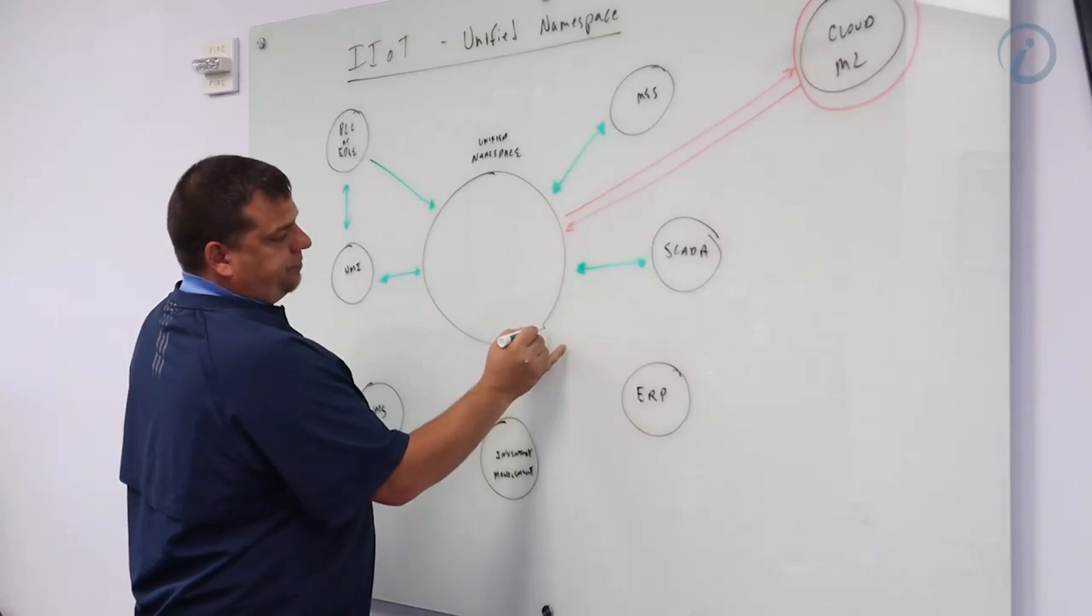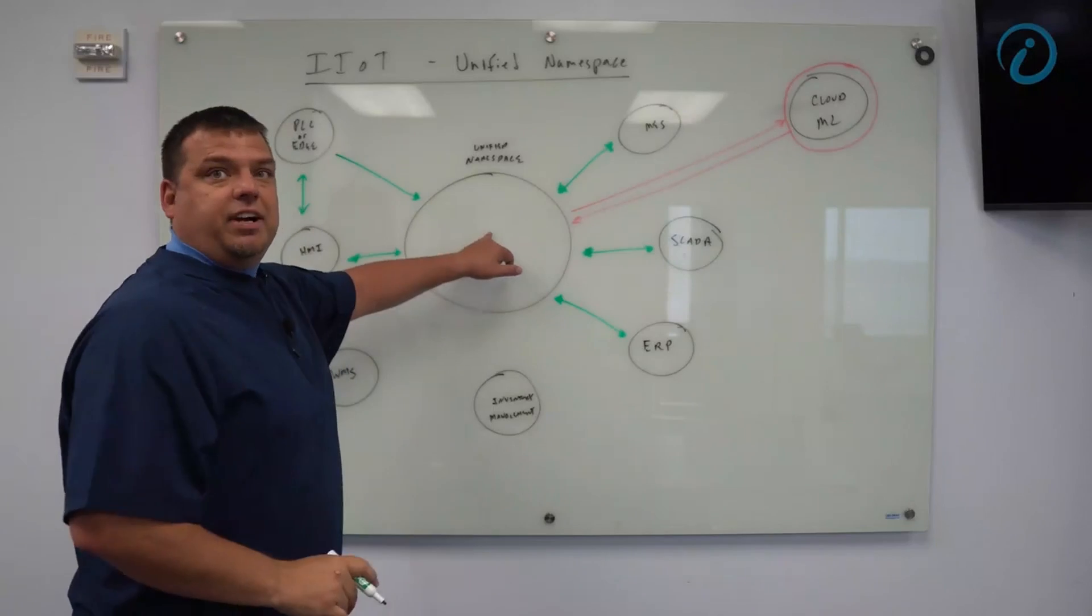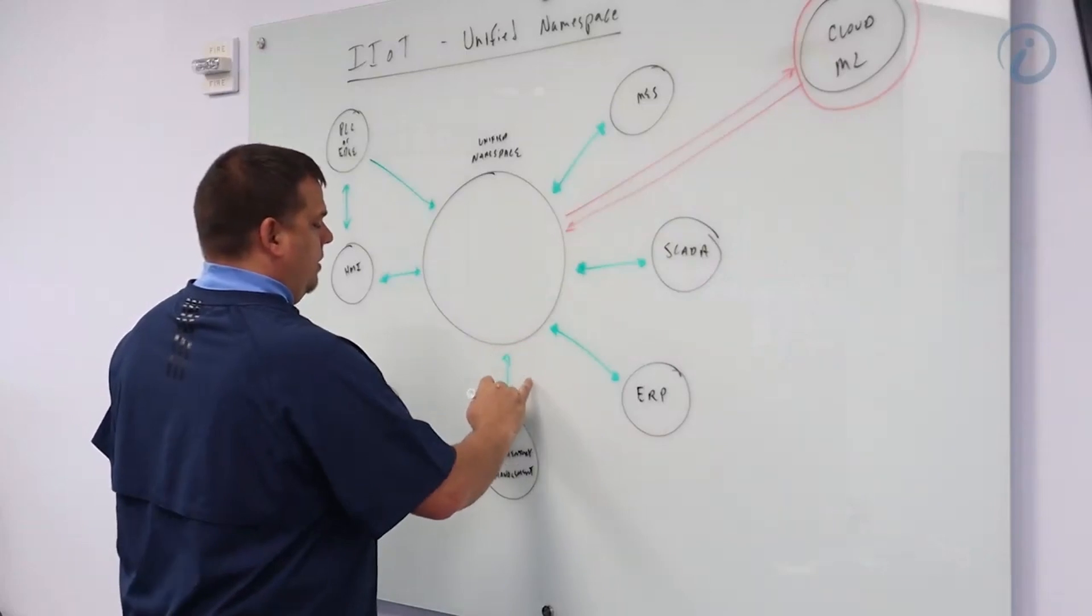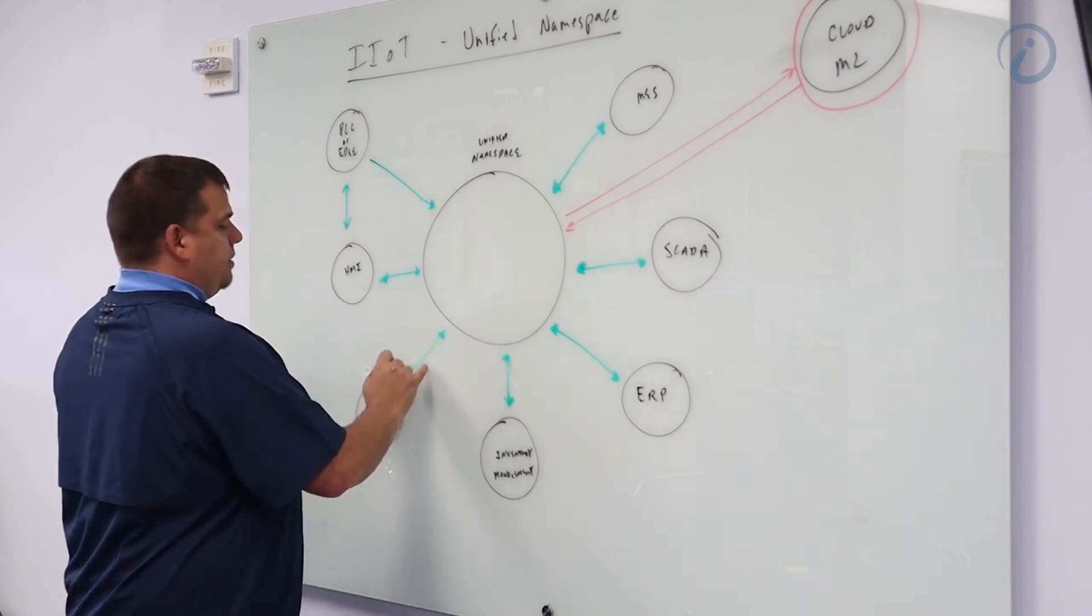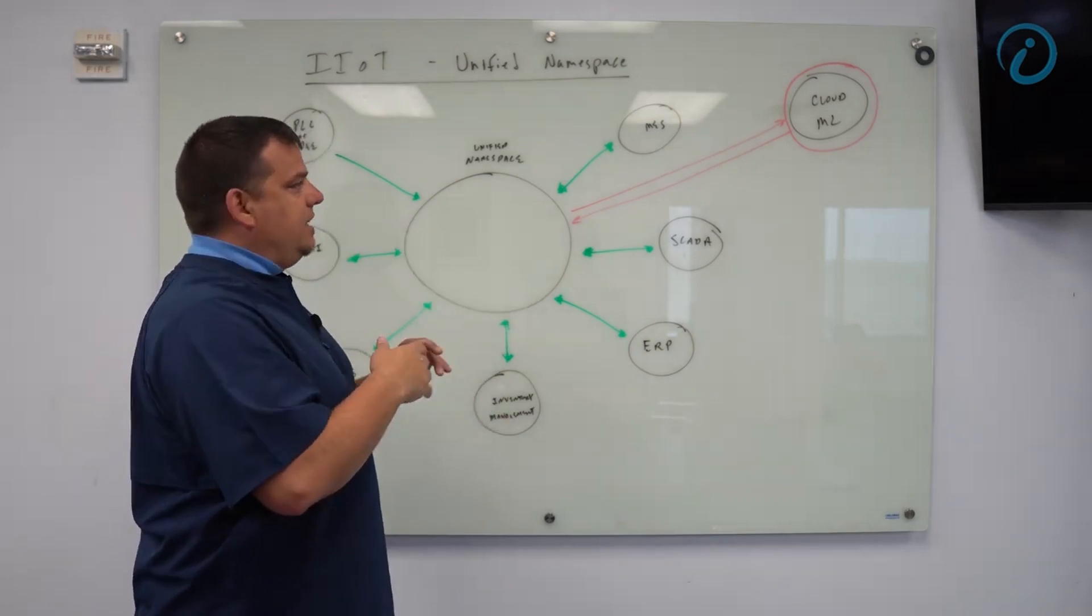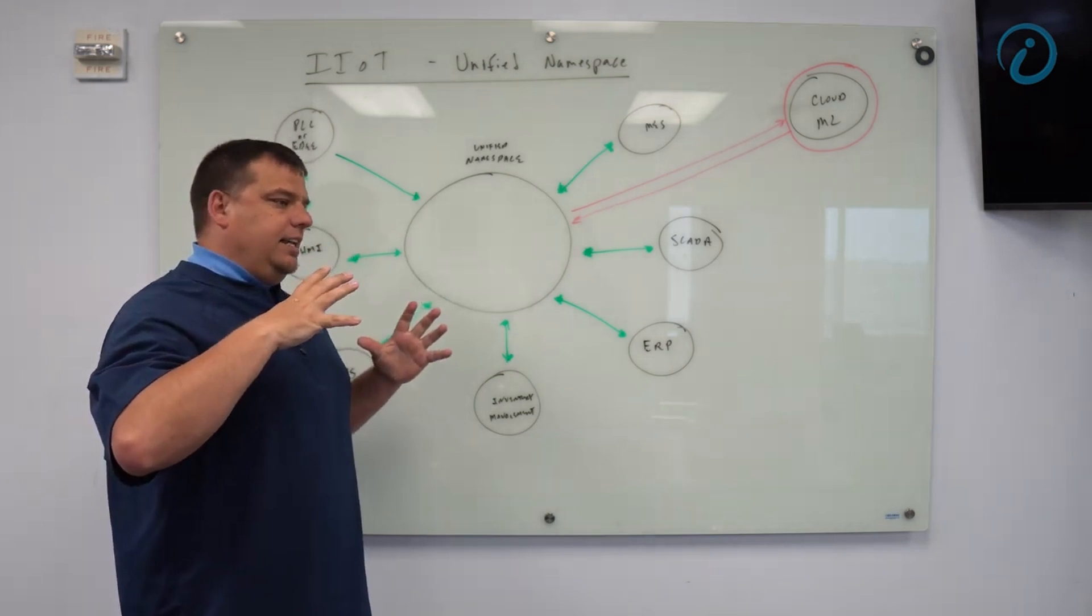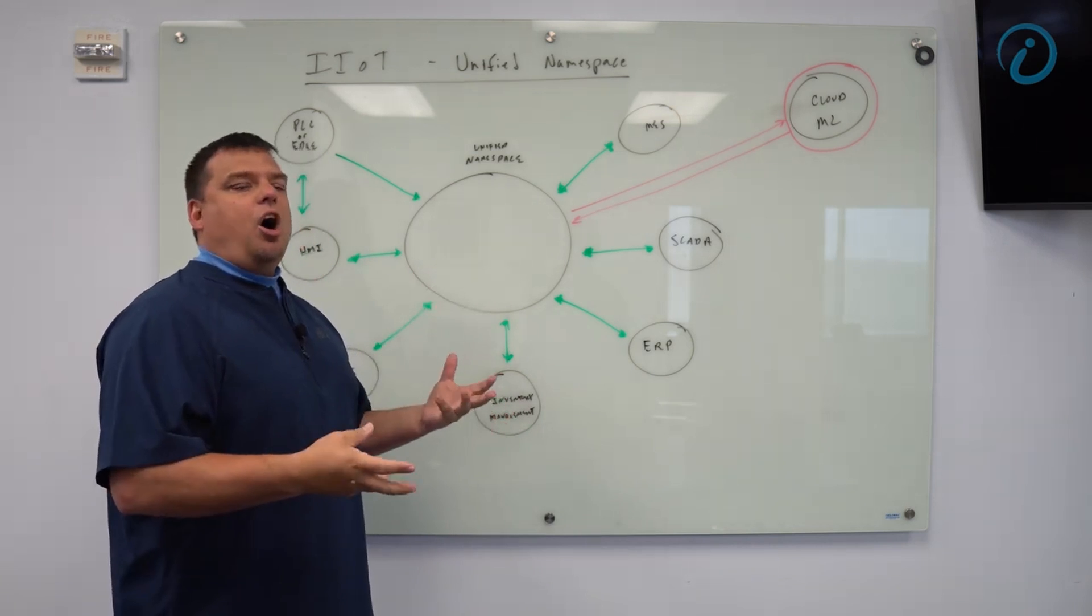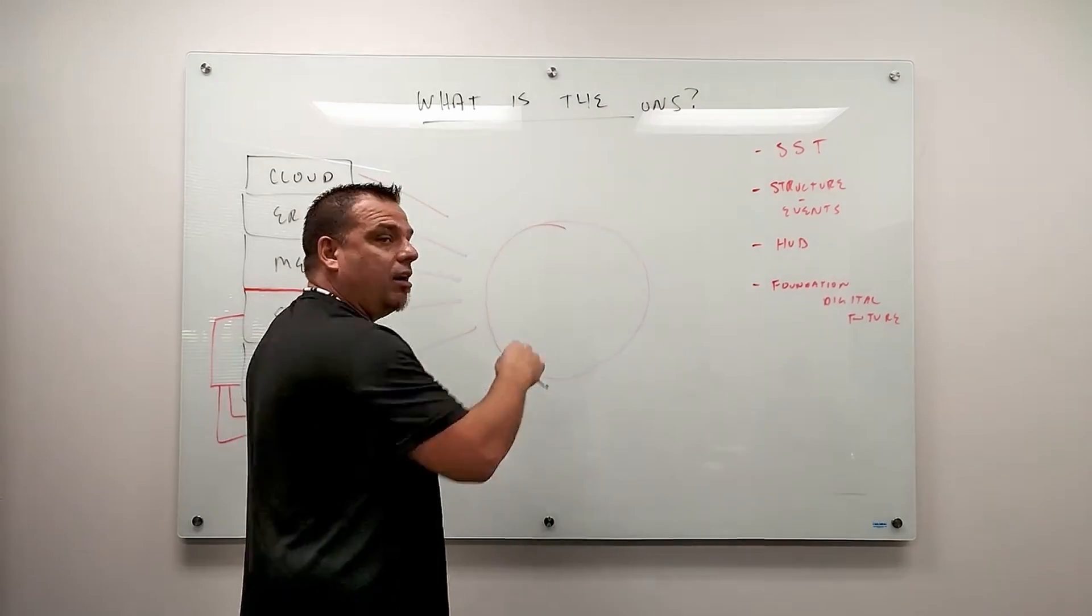The ERP system will then grab its information from the unified namespace, do post processing and publish back in. Same thing with inventory management. There'll be locations in our namespace for inventory management, warehouse management system and for cloud and machine learning. It is literally the unified namespace is all data for our entire business in one place for all applications to be able to consume from.